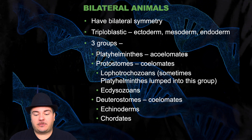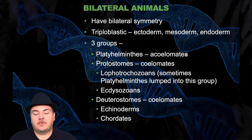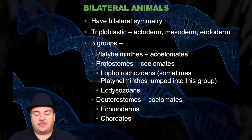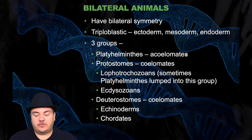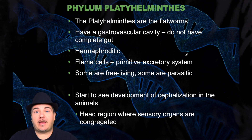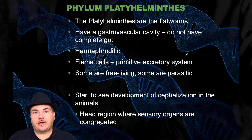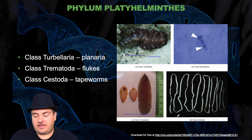Now we're going to talk about animals with bilateral symmetry instead of radial symmetry. These are triploblastic — they have ectoderm, mesoderm, and endoderm. There are three groups: the Platyhelminthes, which are acoelomates; the protostomes, which are coelomates made up of the lophotrochozoans and the ecdysozoans; and the deuterostomes, which are coelomates including echinoderms and chordates. Starting with the flatworms — Platyhelminthes — they have a gastrovascular cavity and do not have a complete gut. They're hermaphroditic; some are free-living and some are parasitic. You start to see development of cephalization, where a head region forms with congregated sensory organs. Examples include planaria, flukes, and tapeworms.